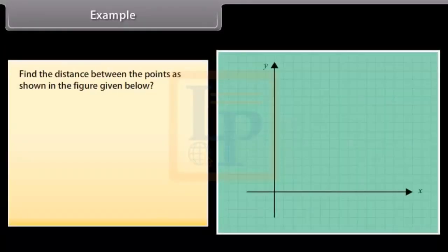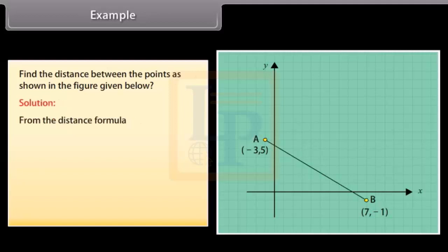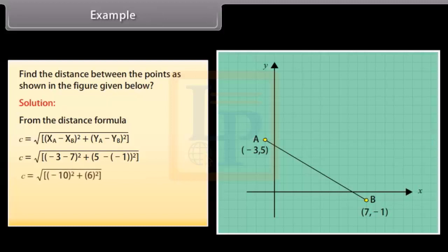Example. Find the distance between the points as shown in the figure given below. Solution. From the distance formula, C is equal to under root of XA minus XB whole square plus YA minus YB whole square. C is equal to under root of minus 3 minus 7 whole square plus 5 minus minus 1 whole square.